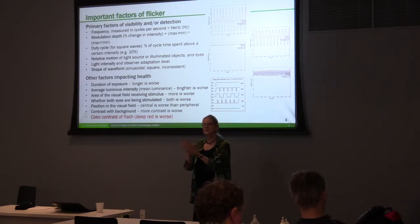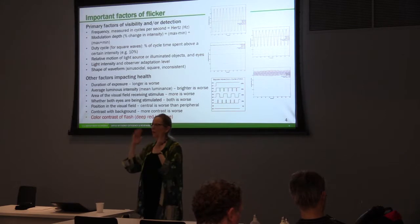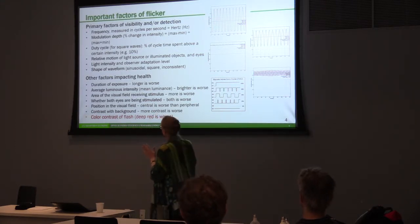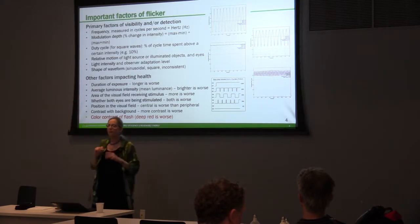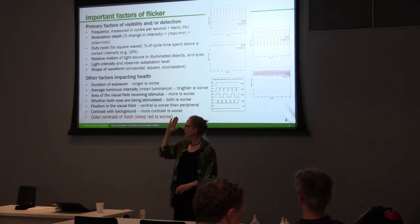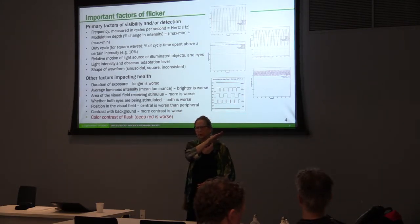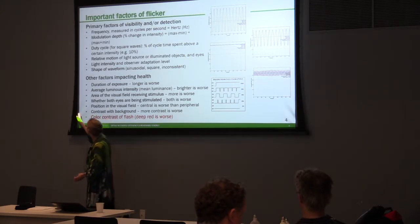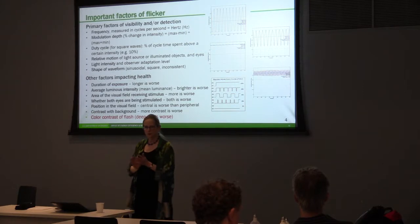Contrast with the background — more contrast is worse. One of the ways I personally pick up flicker is when there's a flickering light source in my field of view and there's a high contrast edge — say, a black edge against a white projected screen. As I'm moving my eyes around, I pick out sequential edges, like trailing arrows on old-fashioned Microsoft cursors. That sharp, high-contrast edge will make the flicker more noticeable.